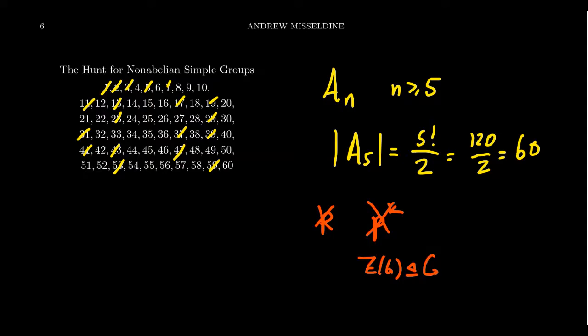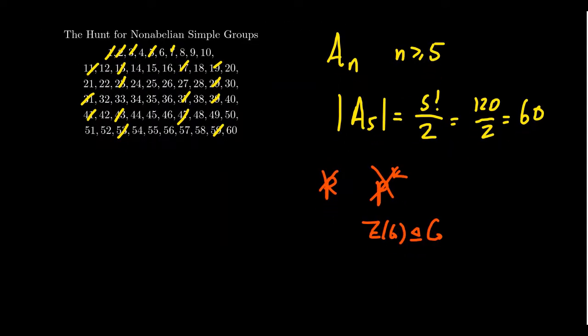And if you're a P-group, that is your order is a power of prime, in that situation, we know that the center is non-trivial. It could be the whole group. You could be abelian in that situation. But in particular, the center of a P-group is always non-trivial.